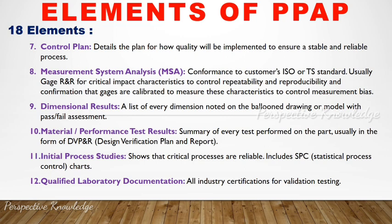The eighth element is Measurement System Analysis (MSA). All measurements and validations are performed to meet customer ISO and engineering standards. Usually, Gauge R&R is used for critical characteristics to control repeatability and reproducibility, with confirmation data that gauges are calibrated. MSA helps identify measurement bias problems. The ninth is Dimensional Results — a list of every dimensional noted on the drawing or model with pass or fail assessment.